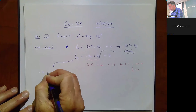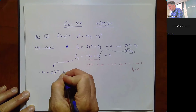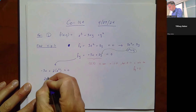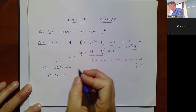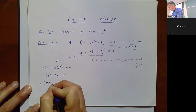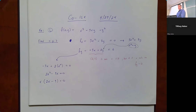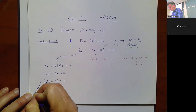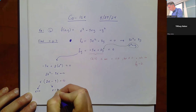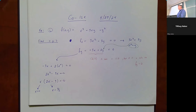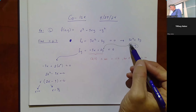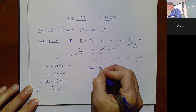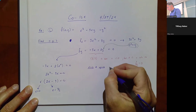The second equation becomes -3x + 2x² = 0, or rewritten as 2x² - 3x = 0. Factoring out x gives x(2x - 3) = 0. So candidates for x are either x = 0 or x = 3/2. To find the corresponding y-coordinates, since y = x², if x = 0 then y = 0, giving critical point (0, 0).